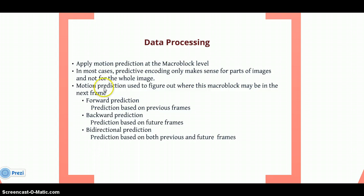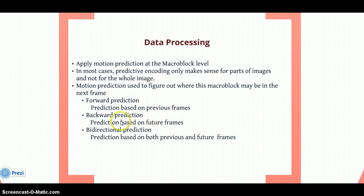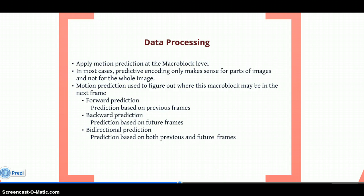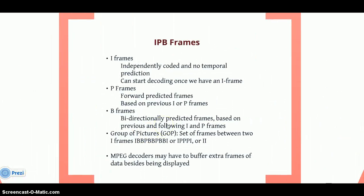Motion prediction is used for predicting the reference pictures. There are different techniques for that. Like forward prediction — it predicts based on the previous frame, whatever frame you have previously. Then backward prediction — it is based on future frames. And then bidirectional prediction — prediction based on both previous and future frames.